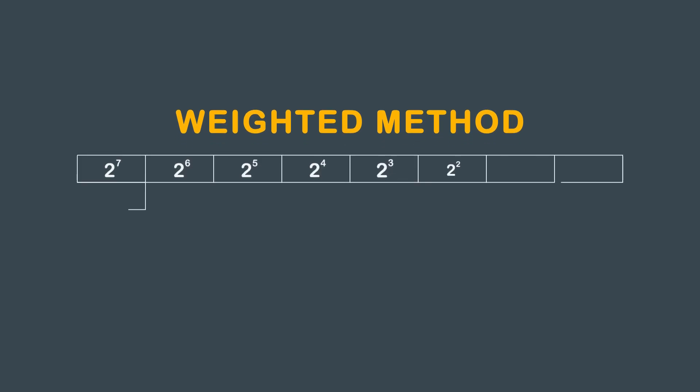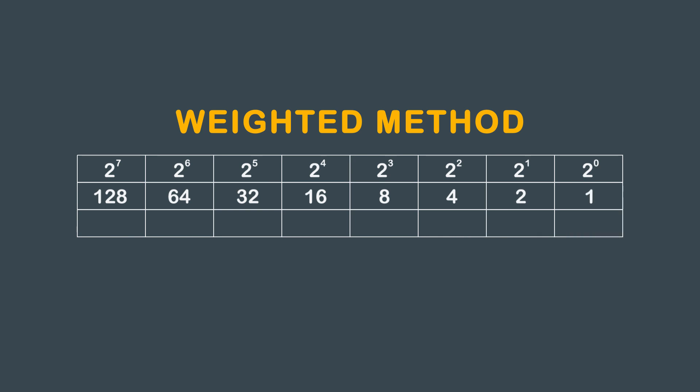The second method is the weighted method. The weighted method uses the power of 2 to create a table. Please feel free to create this table on your own so you may use it for practice questions. This table has 8 places to represent the total number of possible available bits in an octet. The first row is populated with powers of 2, increasing from right to left. The second row is the base 10 representation: 2^0=1, 2^1=2, 2^2=4, 2^3=8, 2^4=16, 2^5=32, 2^6=64, and 2^7=128. We can now use the bottom row for our calculations.